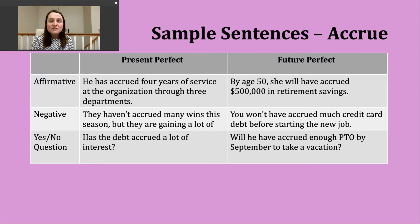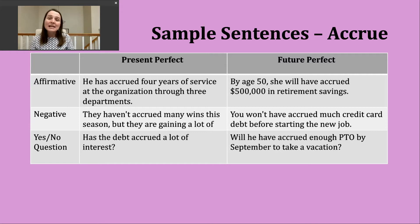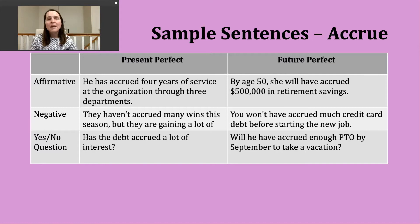Here's an example: 'By age 50, she will have accrued $500,000 in retirement savings.' We have a point in the future and we know she will have accumulated or saved that particular amount of money.